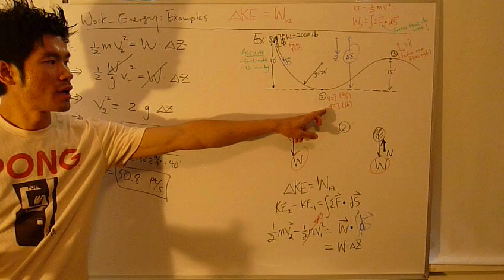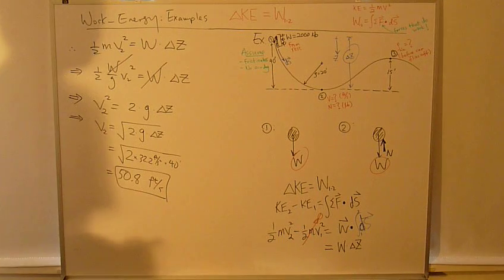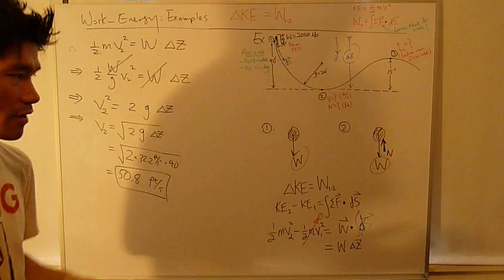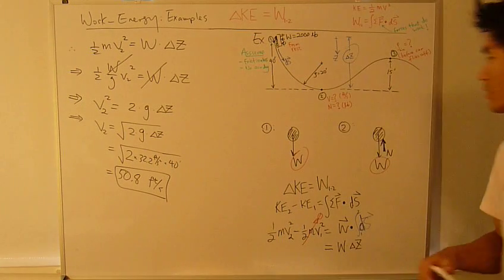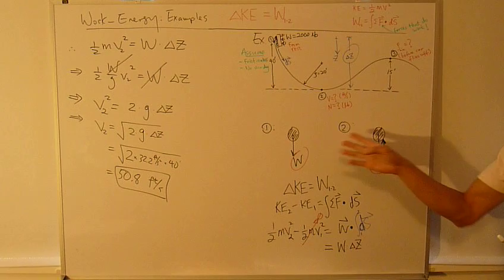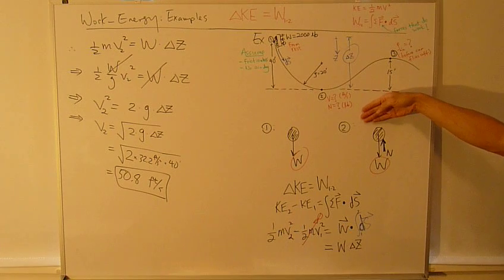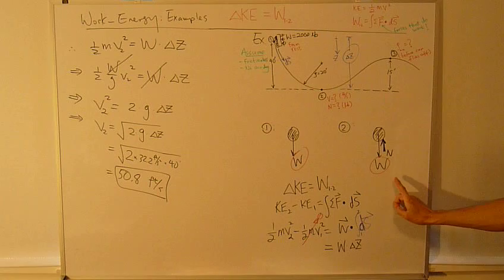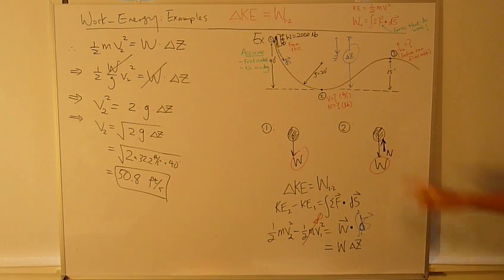Next, we like to find the normal force. Normal force at this position. How do you find it? Now, let's come back to this free body diagram right here. Position 2. You have a weight going down. You have a normal force going up.